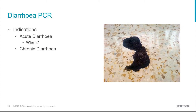PCR also has a clear place with chronic diarrhoea. Once diarrhoea becomes chronic, a full workup is needed: parasitology, testing for infectious causes with PCR, diet trials, ultrasound and endoscopy, and a minimum database including CBC and biochemistry to rule out metabolic causes such as hypoadrenocorticism or pancreatitis. PCR can help rule in or out infectious causes within that workup.